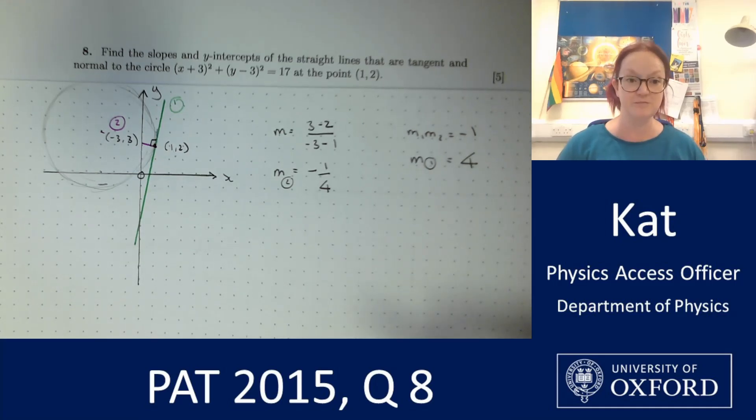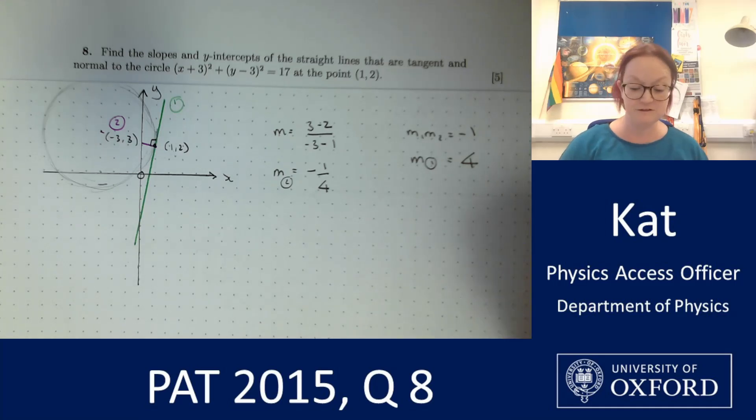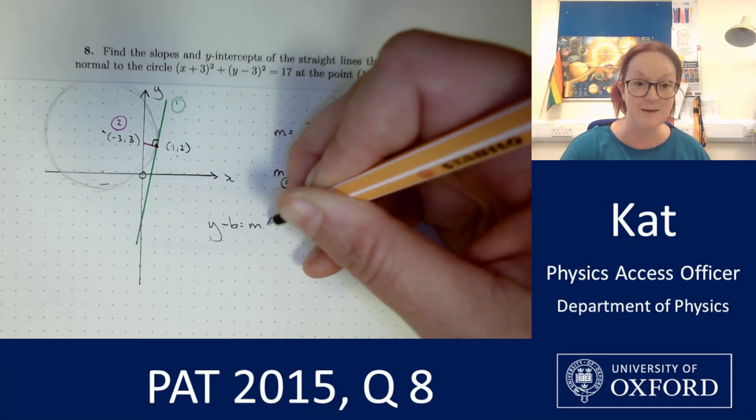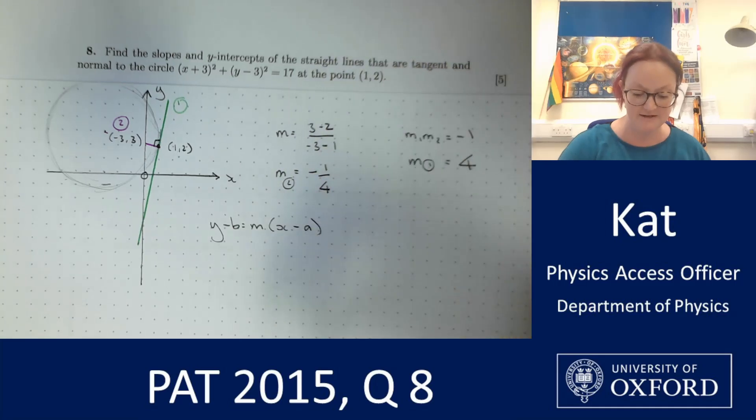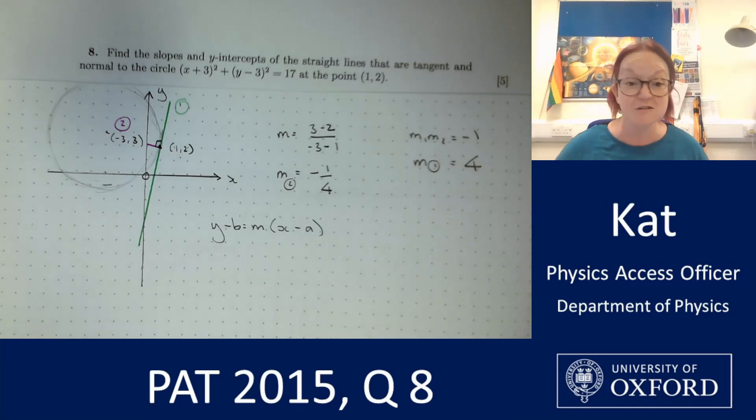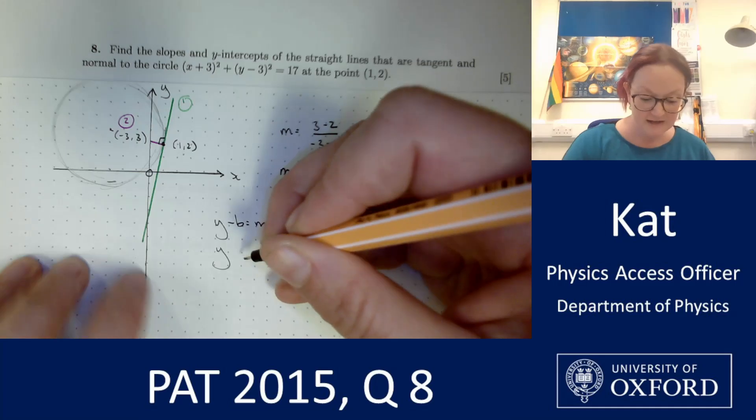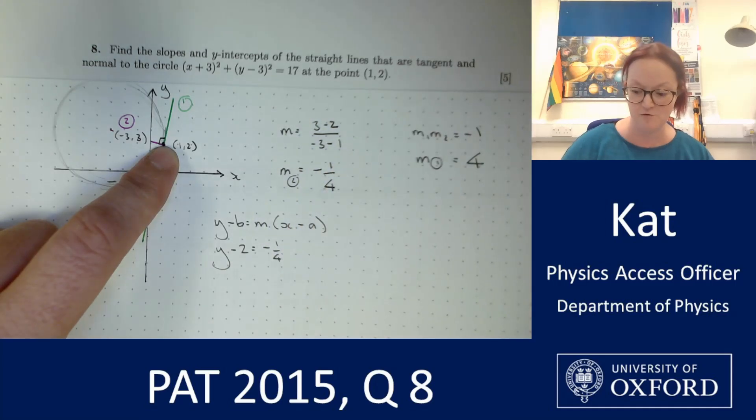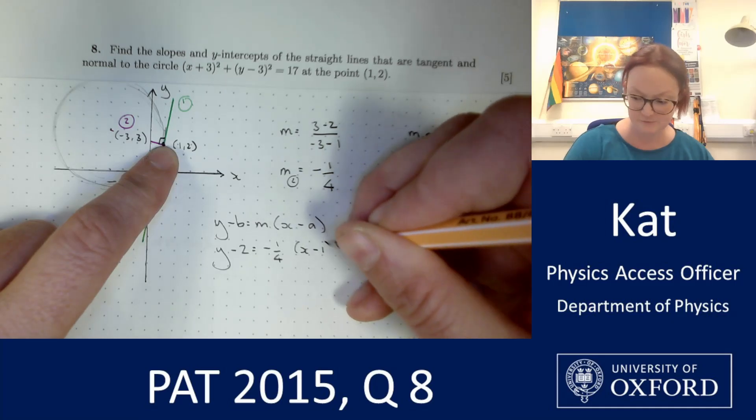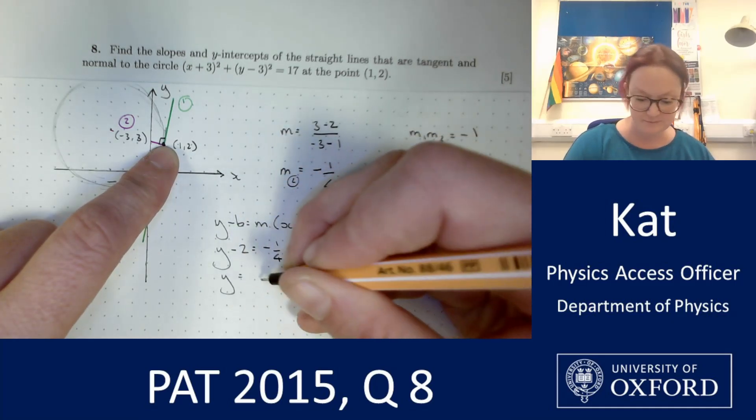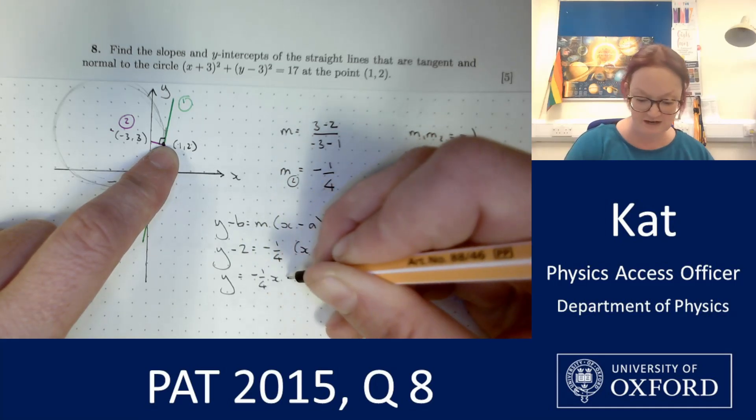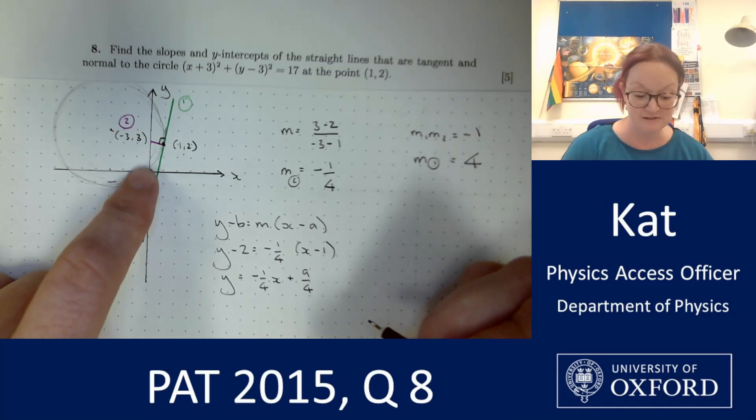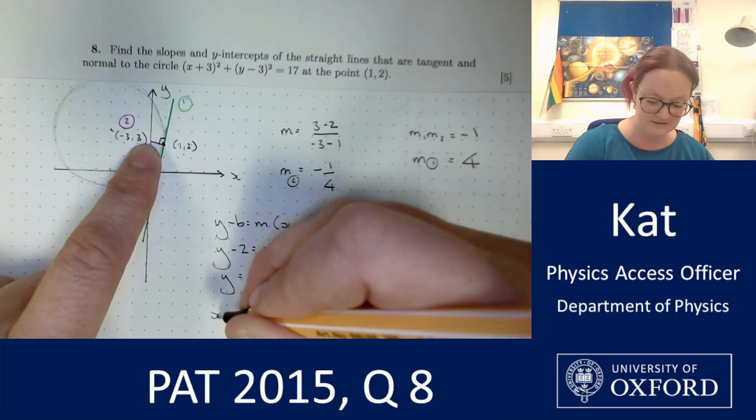All I need to find the equation of my lines are a gradient and a point on them. So I'm going to do that for both of my lines just using the straight line formula y - b = m(x - a). Let's do that for line 2 first because I find its gradient first. It makes more sense that way. And I'm going to use the point (1,2). So I'm going to use y - 2 = -1/4(x - 1). A bit of quick simplifying, that's going to come out to -¼x + 9/4.